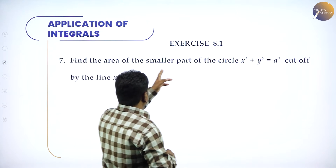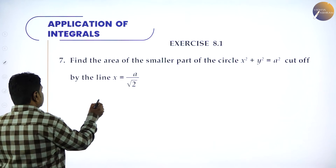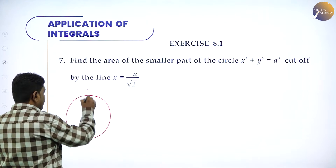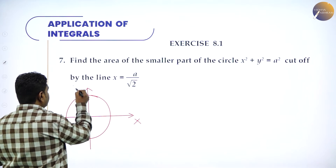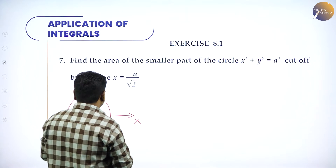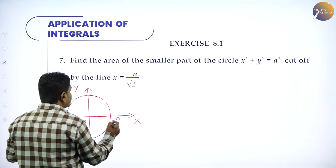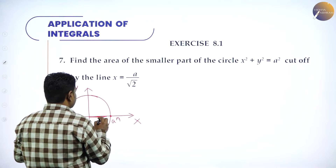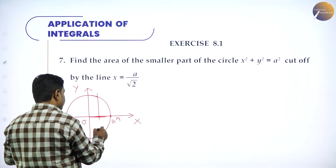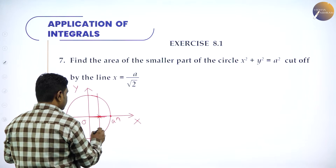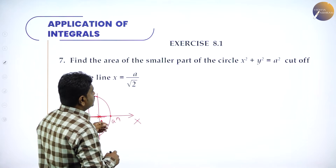Next problem: find the area of the smaller part of the circle x² + y² = a², cut off by the line x = a/√2. The circle has center at the origin and radius a. The line x = a/√2 is a vertical line (parallel to y-axis) at x = a/√2, which is less than a, so it lies inside the circle.